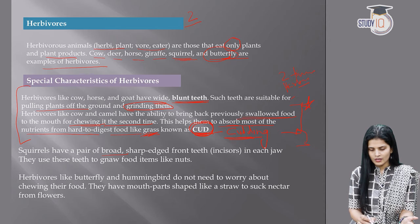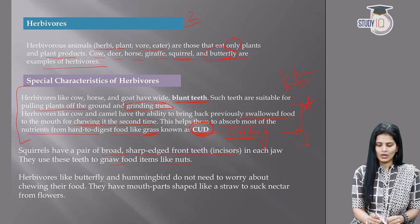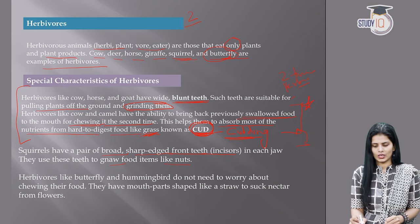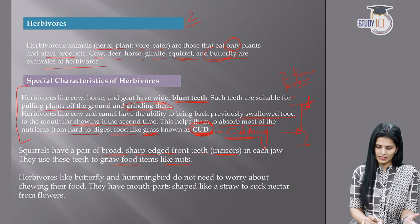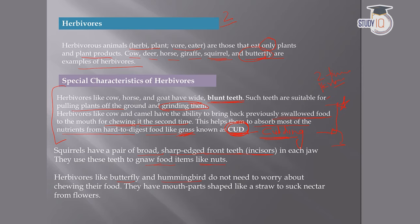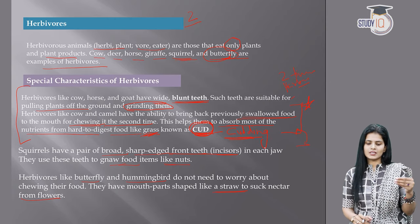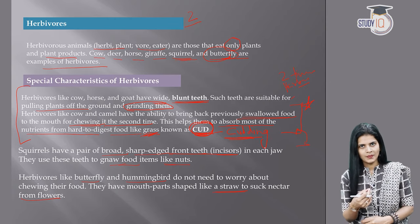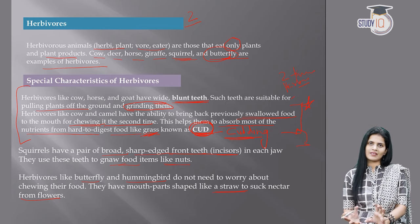Squirrels have a pair of broad sharp-edged front teeth in each jaw which they use to gnaw food items like nuts. Herbivorous animals like butterfly and hummingbird have mouth parts shaped like a straw to suck nectar from flowers — they do not need to chew. These are the special characteristics of herbivorous animals.